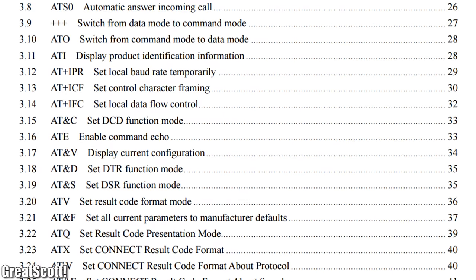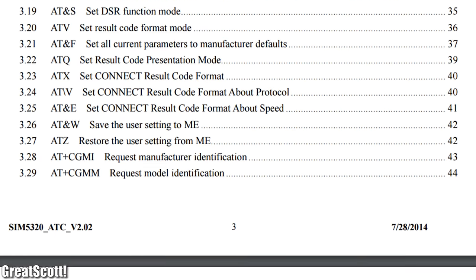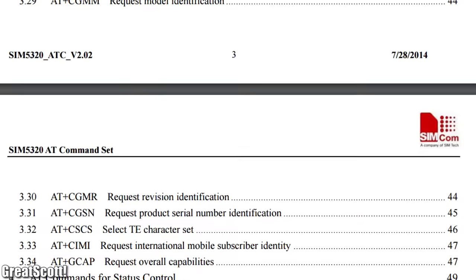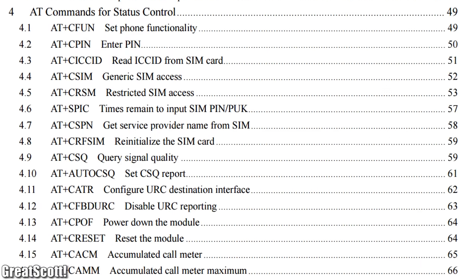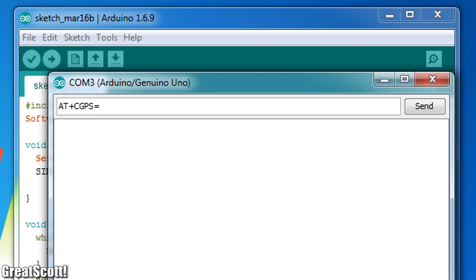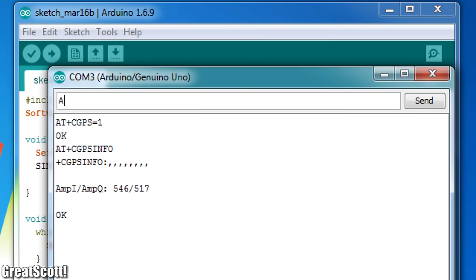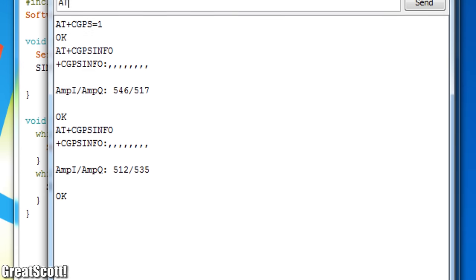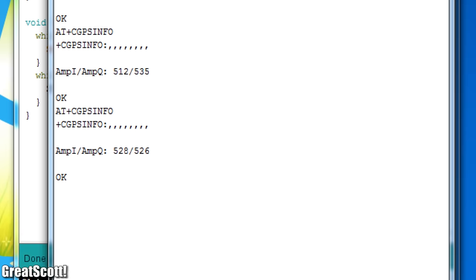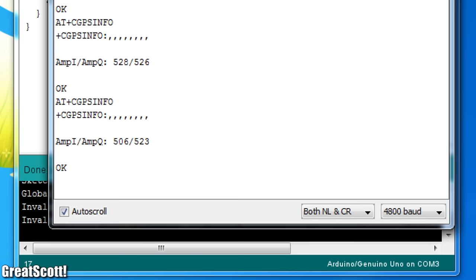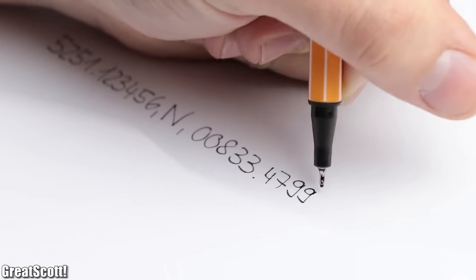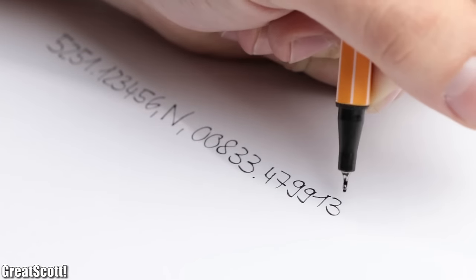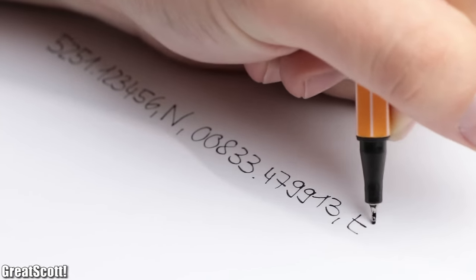And we can now use dozens of different AT commands from the 500 pages AT command sets to tell the board what to do. For the GPS location though, we basically just need these two commands one after the other. But keep in mind that the second commands can take quite a while to return anything useful. Here I am censoring the received information for obvious reasons.